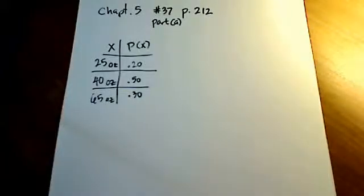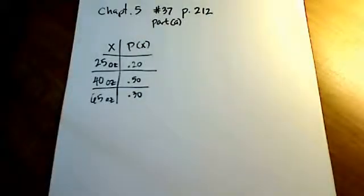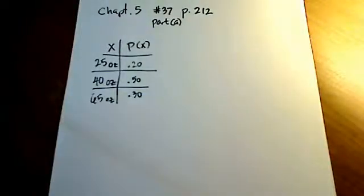Hello, this is Professor Poyser and I'm going to show you how to work out question number 37 from chapter 5, which is on page 212 in your book. I'll probably only have enough time to show you part A. I'll show you part B of the question in a separate video.